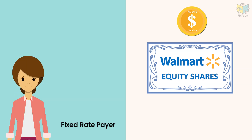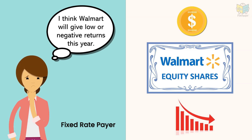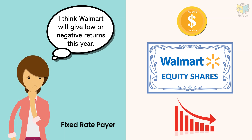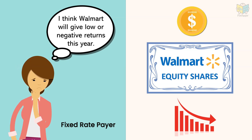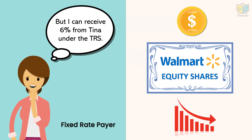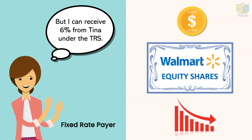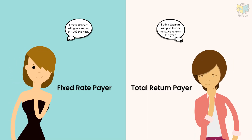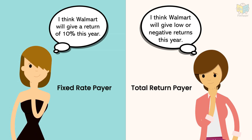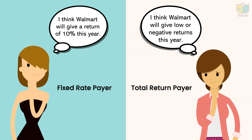Lily feels that this year the share price of Walmart will decrease, and the total return will be lower than 6%, say around 3%. As she will receive 6% from Tina as per the agreement, the swap will benefit her. Thus, as we can see, both of them are having a different opinion on how Walmart will perform this year.